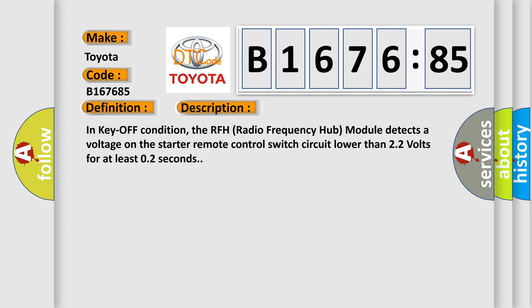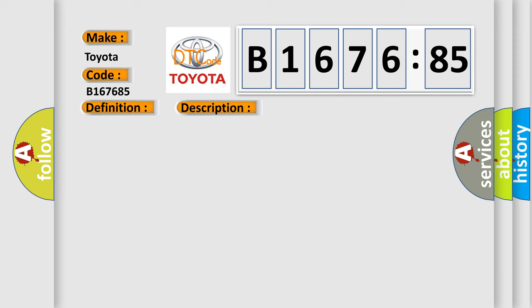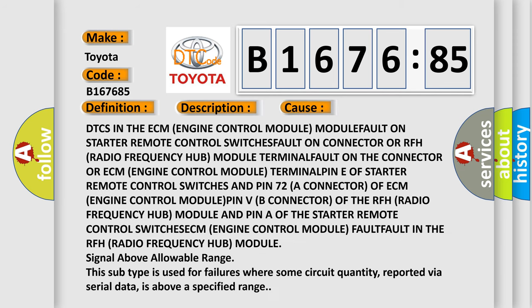And now this is a short description of this DTC code. In key-off condition, the RFH (Radio Frequency Hub) module detects a voltage on the starter remote control switch circuit lower than 2.2 volts for at least 0.2 seconds. This diagnostic error occurs most often in these cases.